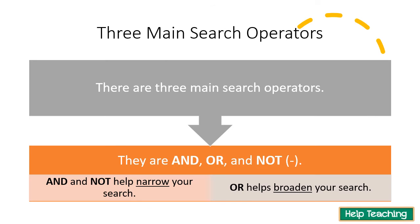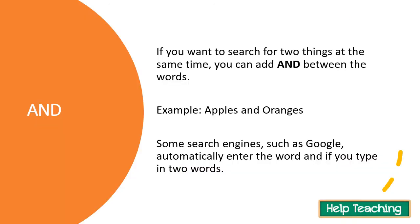There are three main search operators. Two of them are used to help narrow down your search and reduce the number of results, and one of them helps broaden your search or increase the number of results. The two that help narrow your search are AND and NOT, and the one that helps broaden your search is OR. If you want to search for two or more things at the same time, you can add AND between the words.